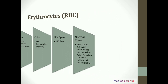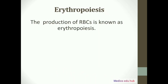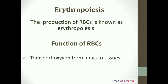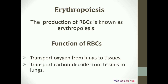The question is: what is erythropoiesis? The production of RBCs is known as erythropoiesis. Next, we will see the function of RBCs. The main function of RBC is to transport oxygen — RBCs transport oxygen from lungs to tissues, and transport carbon dioxide from tissues to lungs. That's all about RBCs.